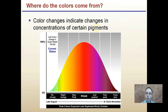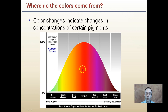Where do the colors come from? Color changes indicate changes in concentrations of certain pigments. We can see the coloration differences from no change to trees being bare. Typically from late August to early November is when we see this transition occur. This particular color palette is for sugar maple trees — different trees may have different color patterns. The sugar maples in particular are known for producing some very brilliant colors.